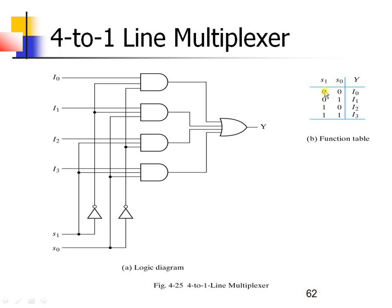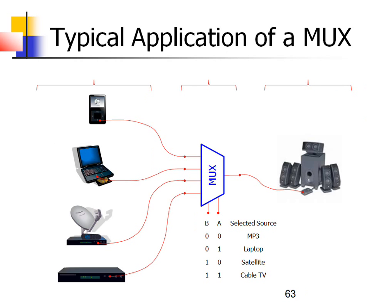Here you can see the truth table. S1 and S0 are the 2 selection lines, Y is the output, and I0 to I3 are the input sources. If S1 and S0 are 0,0 the output is I0; for 0,1 the output is I1; for 1,0 the output is I2; and for 1,1 the output is I3. This is the logic diagram of the 4-to-1 line multiplexer implemented using logic gates.